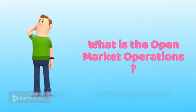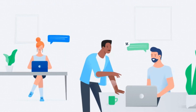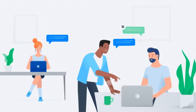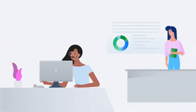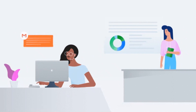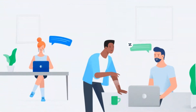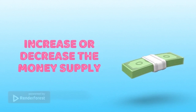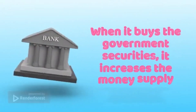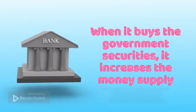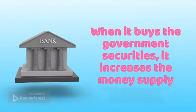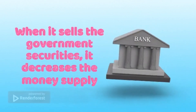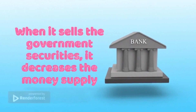You might wonder, what exactly are open market operations? Open market operations is when the Federal Reserve buys or sells government securities in order to increase or decrease the money supply. When the Federal Reserve buys securities, it increases the money supply, and when it sells securities, it decreases the money supply.